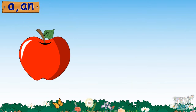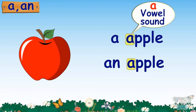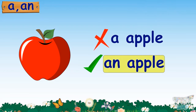What is this? We will say: this is an apple. This is a single apple, so we have to use 'a' or 'an' before it. Apple starts with the sound of A, so it is a vowel sound. So we will choose 'an'. It is an apple.